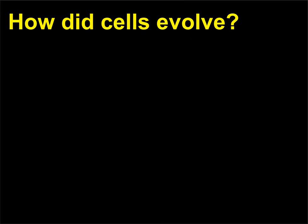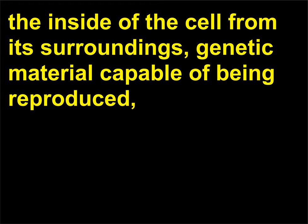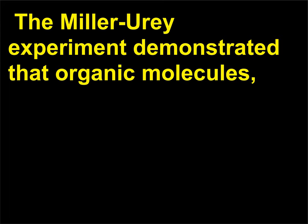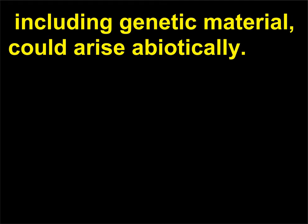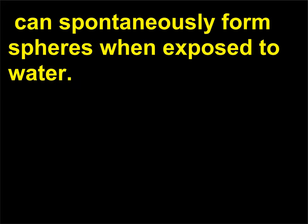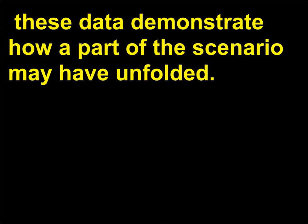How did cells evolve? The central criteria for living cells are a membrane capable of separating the inside of the cell from its surroundings, genetic material capable of being reproduced, and the ability to acquire and use energy — metabolism. The Miller-Urey experiment demonstrated that organic molecules, including genetic material, could arise abiotically. Phospholipids, the molecules that comprise all cellular membranes, can spontaneously form spheres when exposed to water. Although no one knows exactly how living cells evolved, these data demonstrate how a part of the scenario may have unfolded.